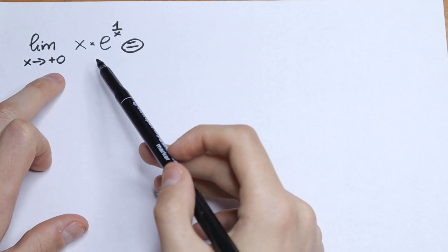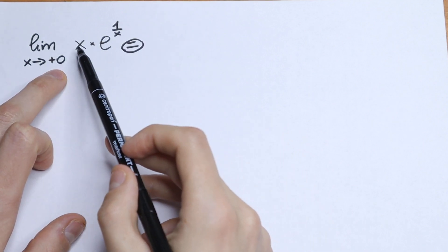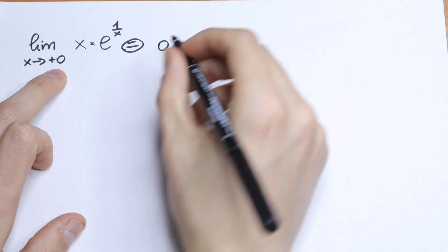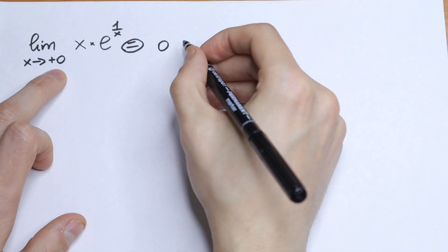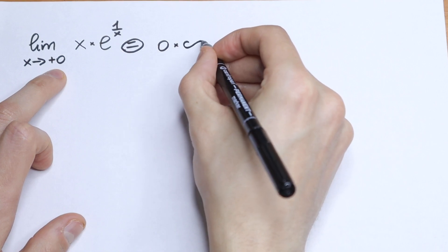So first of all we need to plug in 0. What we will have? We will have that this is 0 and e to the power 1 over x is going to infinity. So we will have 0 times infinity.